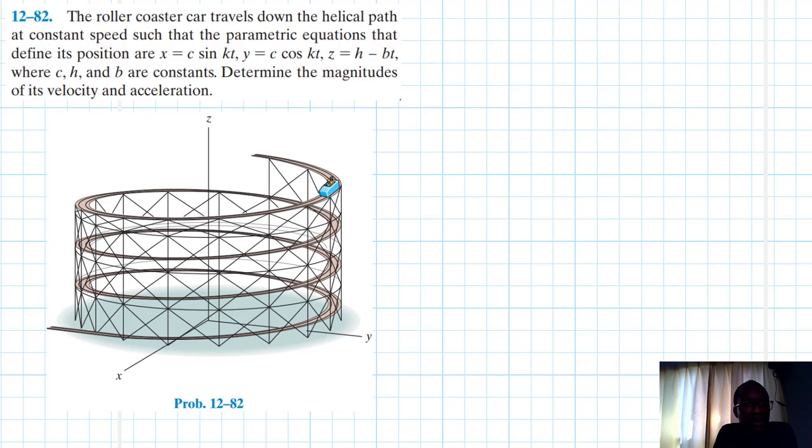The problem reads: the roller coaster car travels down the helical path at constant speed such that the parametric equations that define its position are x = c sin kt, y = c cos kt